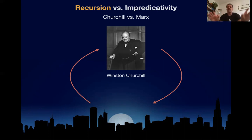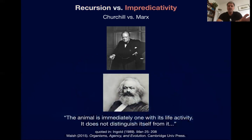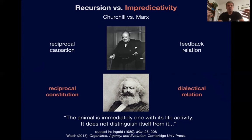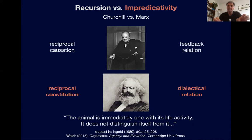But Rosen's diagram is different. All the efficient causes in Rosen's diagram, or in Hofmeyer's scheme of the cell, generate each other. It is much more like Marx's quote: 'The animal is immediately one with its life activity. The animal is what it does.' A dynamical system is what it does — it does not distinguish itself from its activity. This is not two independent things with causal feedback; this is reciprocal constitution. These causes don't even exist without each other — they have a dialectical relation.